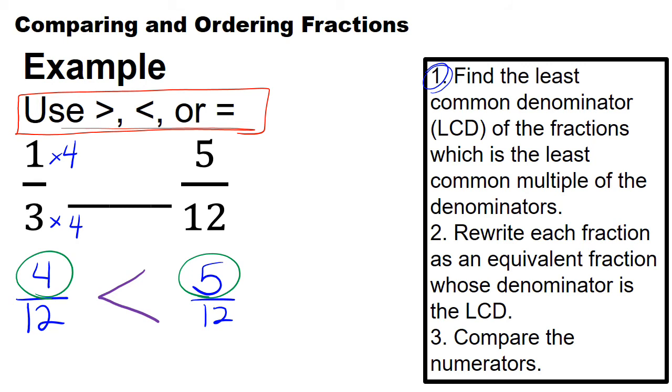And when you see things like ordering fractions, and it gives you several fractions in a row, the biggest thing you can do is go through these steps. So you'd find common denominators, you'd rewrite each fraction, and then all you have to do at the very end is compare the numerators and follow the directions. In ordering, it will either say least to greatest or ascending or greatest to least or descending.